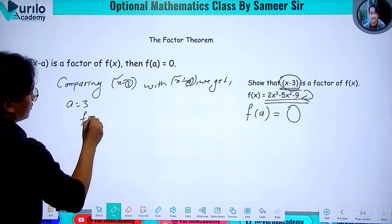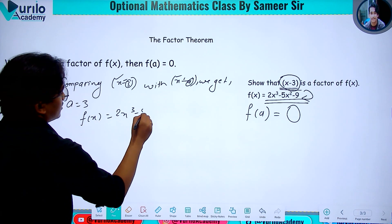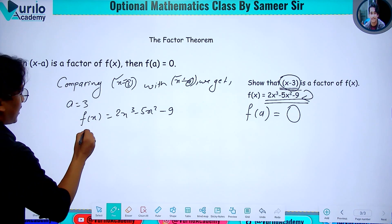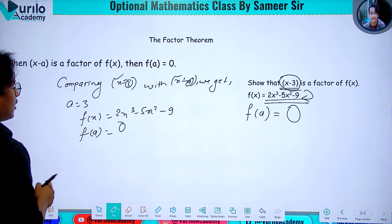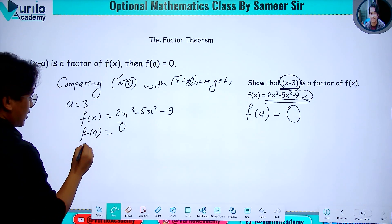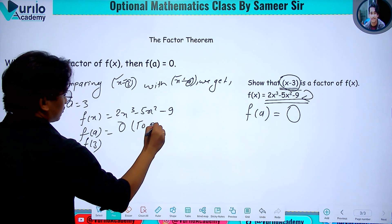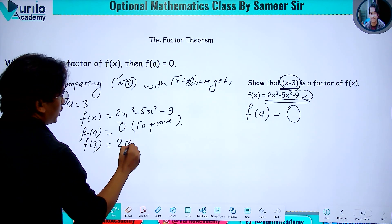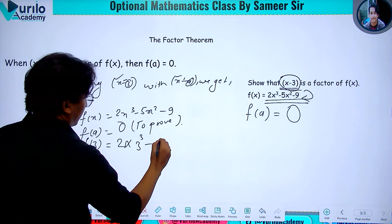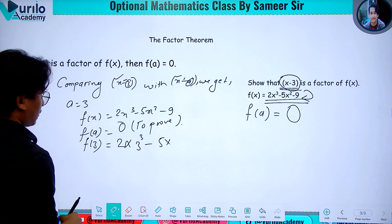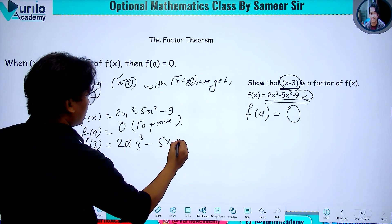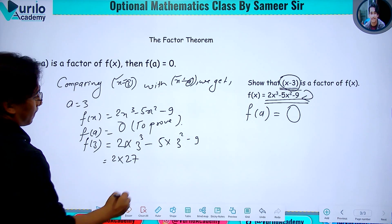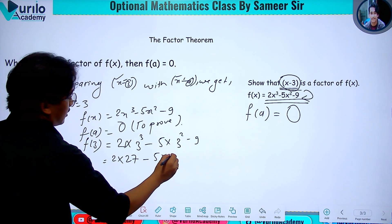Comparing x minus 3 with x minus a, we get a equals 3. Now f of x equals 2x cubed minus 5x squared minus 9. We need to find f of 3, substituting x equals 3: 2 into 3 cubed minus 5 into 3 squared minus 9.